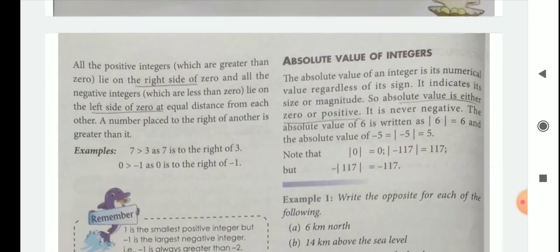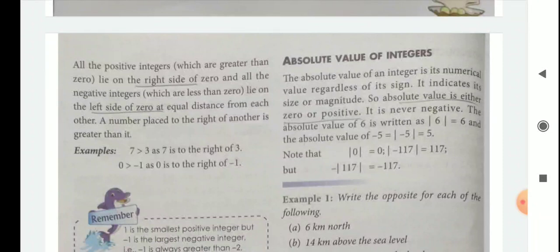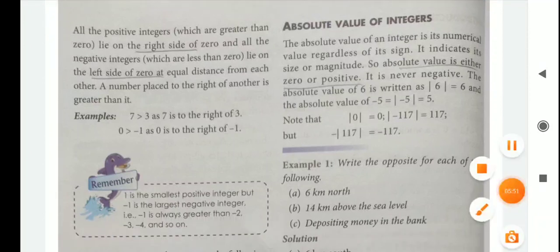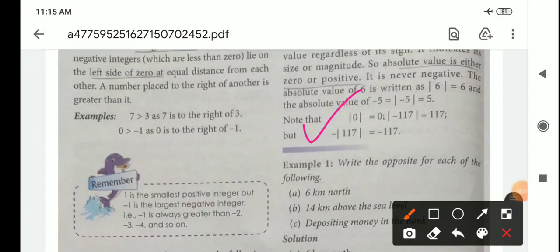Then, absolute value of integers. The absolute value of an integer is its numerical value regardless of its sign. It indicates its size or magnitude. Absolute value is either 0 or positive, but never negative. The absolute value of 6 is 6. The absolute value of minus 5 is 5. The absolute value of 0 is 0. Note that in the case of minus 117, the absolute value is 117, because the minus sign is not included within the absolute value.